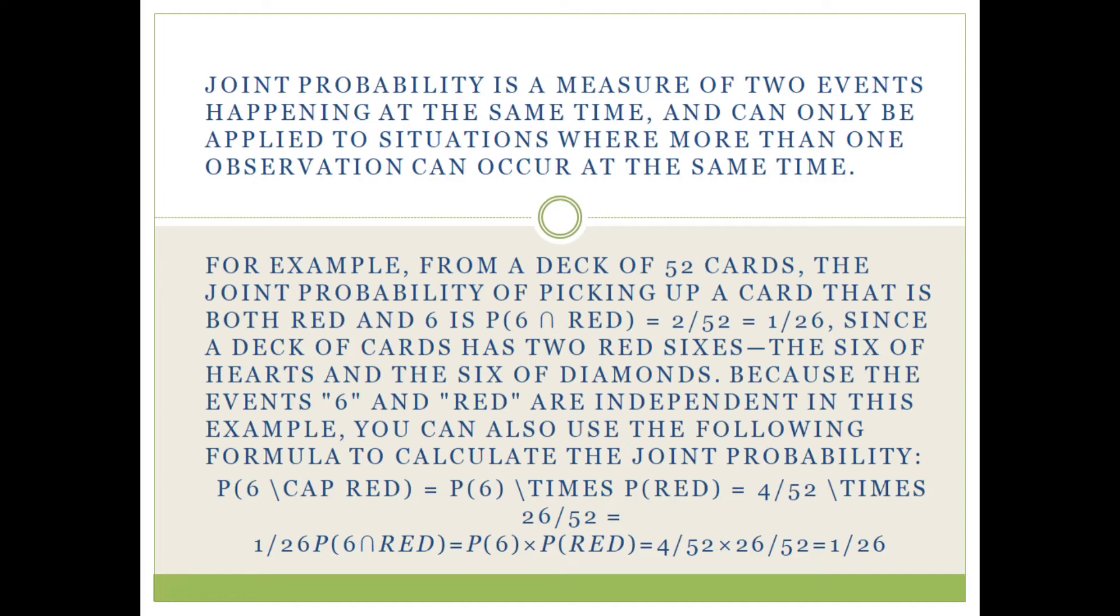For example, from a deck of 52 cards, the joint probability of picking up a card that is both red and six is P(6∩RED) = 2/52 = 1/26, since a deck of cards has two red sixes: the six of hearts and the six of diamonds.